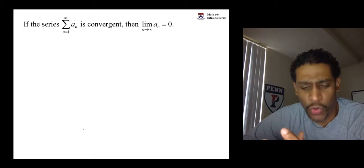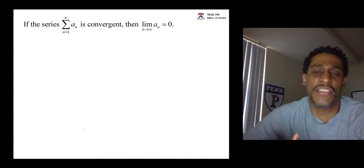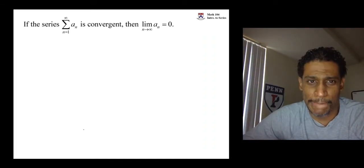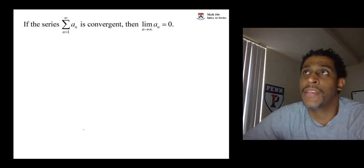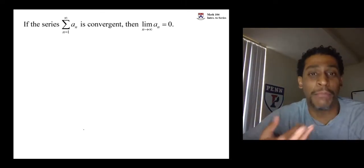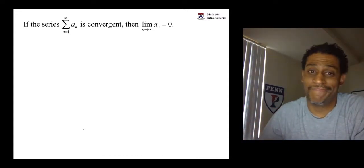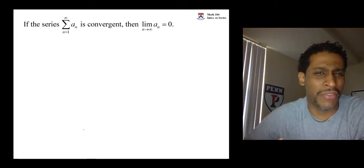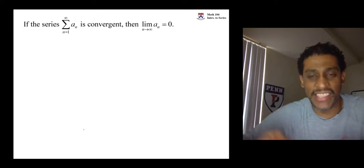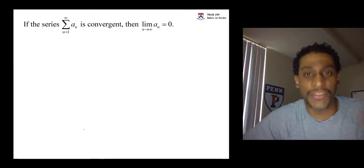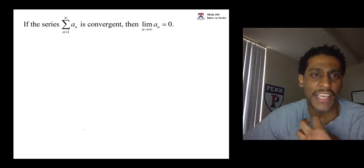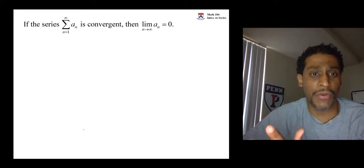In this video we look at the test for divergence — some places you might see it called the nth term test. Let's start with a known fact: if you have a series that is convergent, then the limit as n goes to infinity on the terms of the series will be zero. If a series is convergent, there is a sum — all the infinite numbers add up to a finite number. If the terms aren't going to zero, then you don't have a chance to converge.